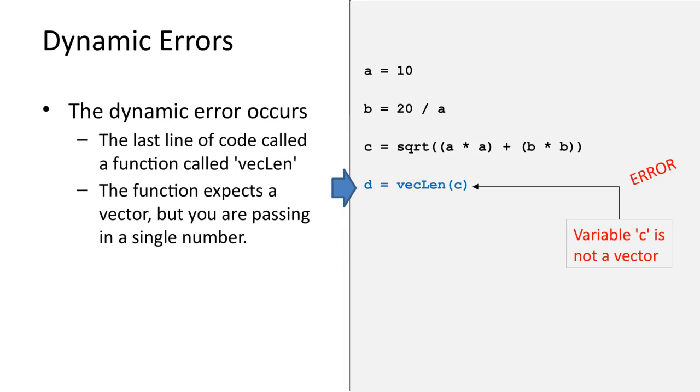The code calls a function to calculate the length of a vector. A vector is a list of three numbers. But the code is passing in a single number to that function, not a vector. This will result in a dynamic error being generated.